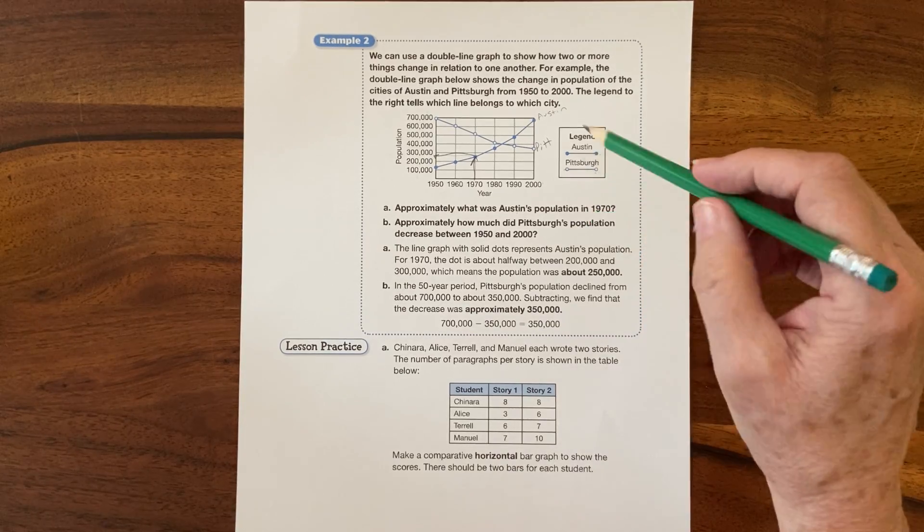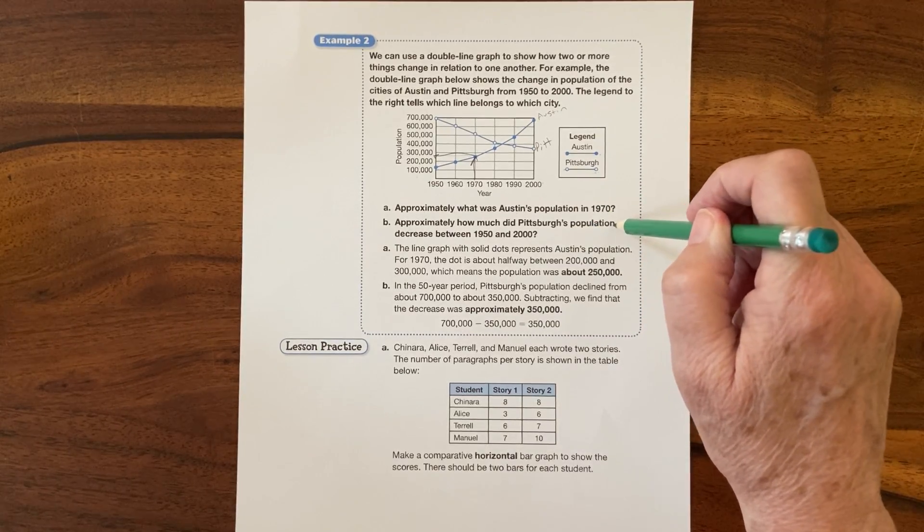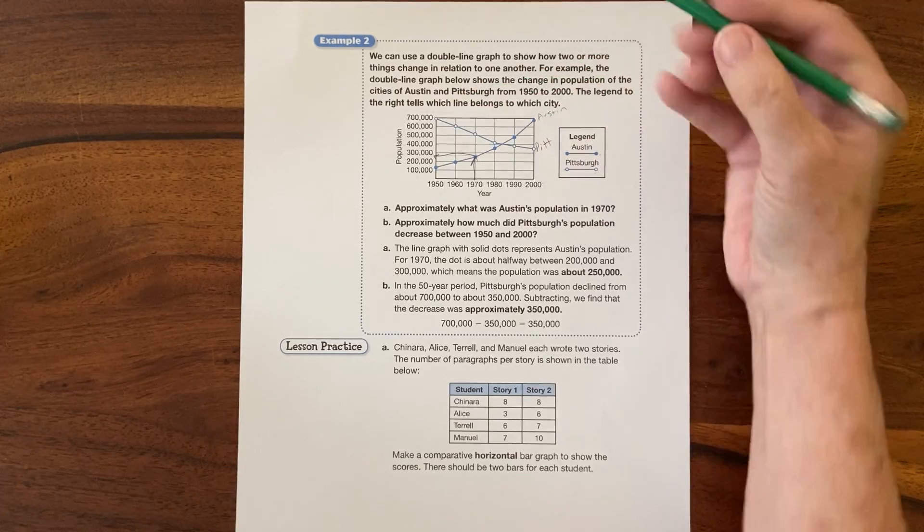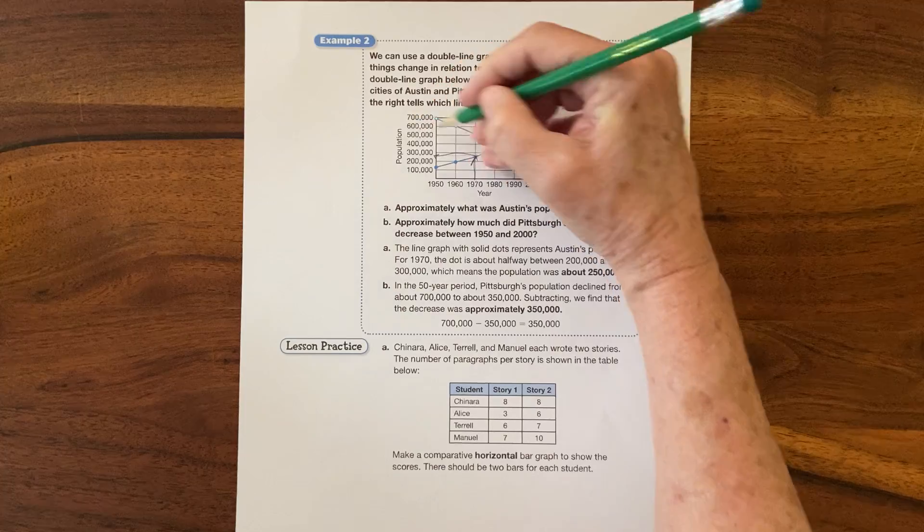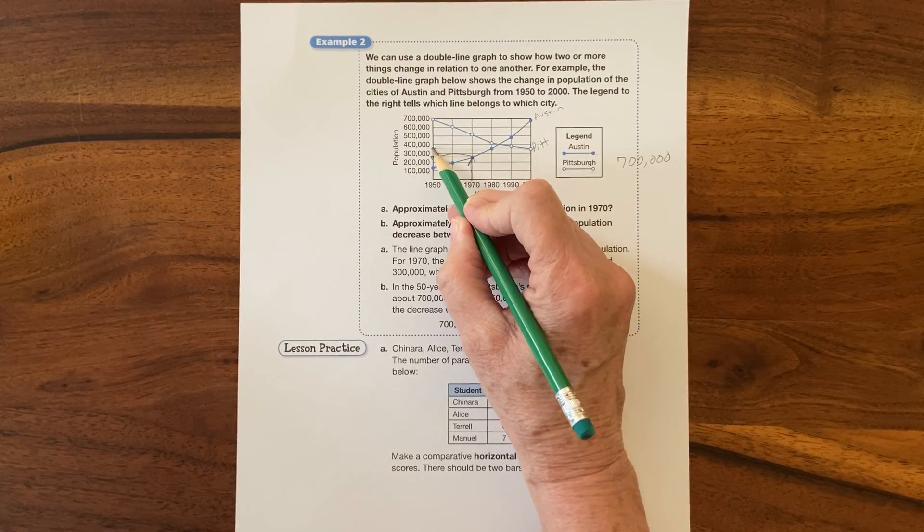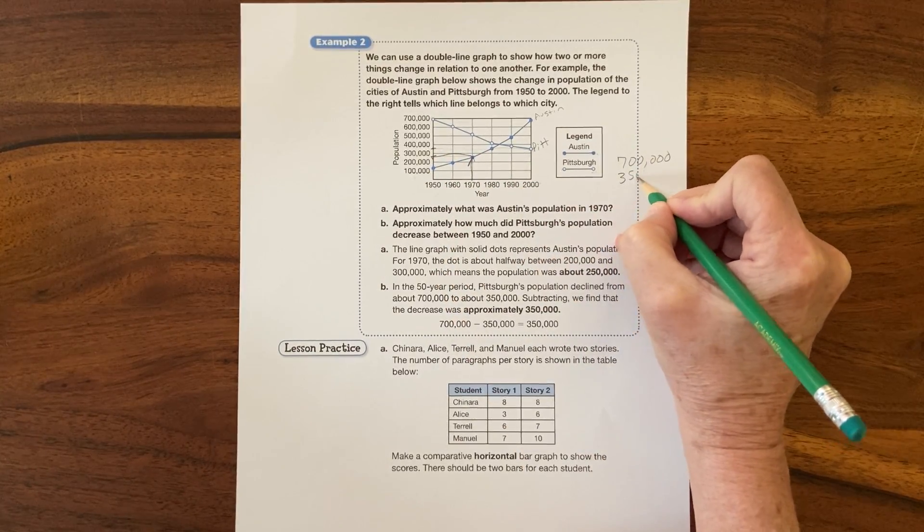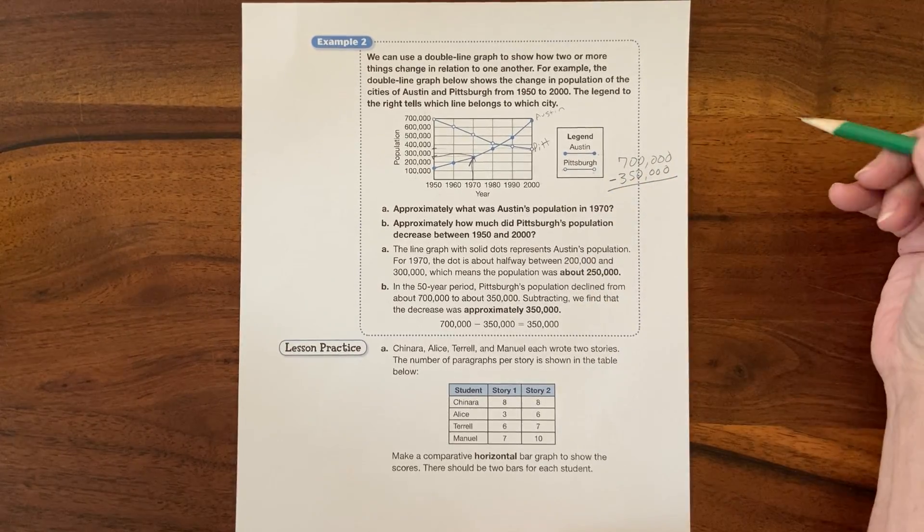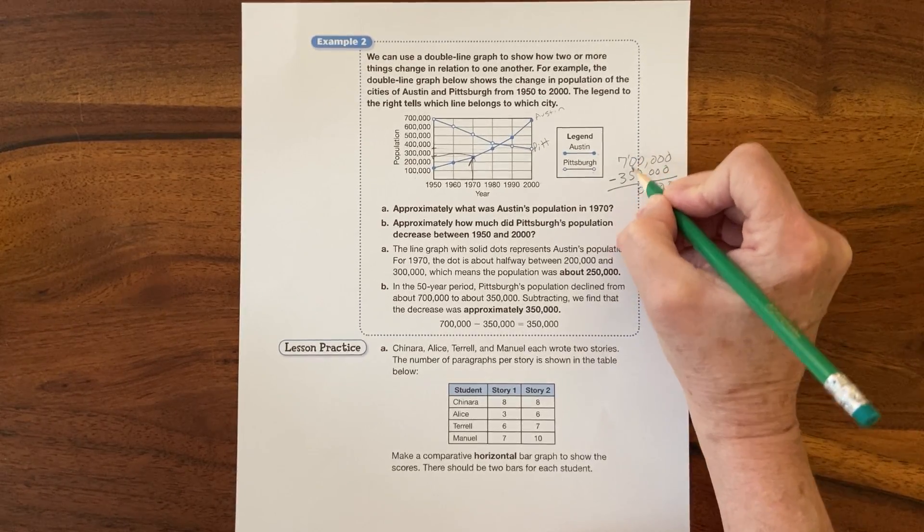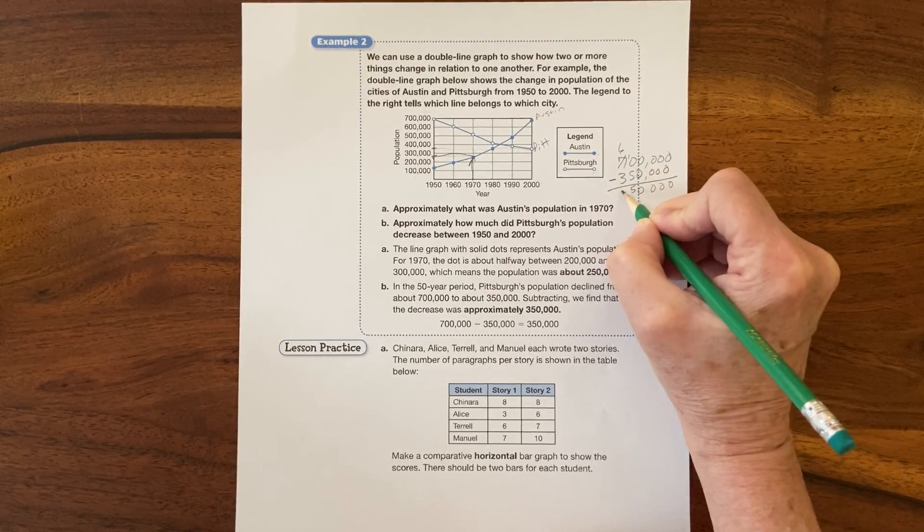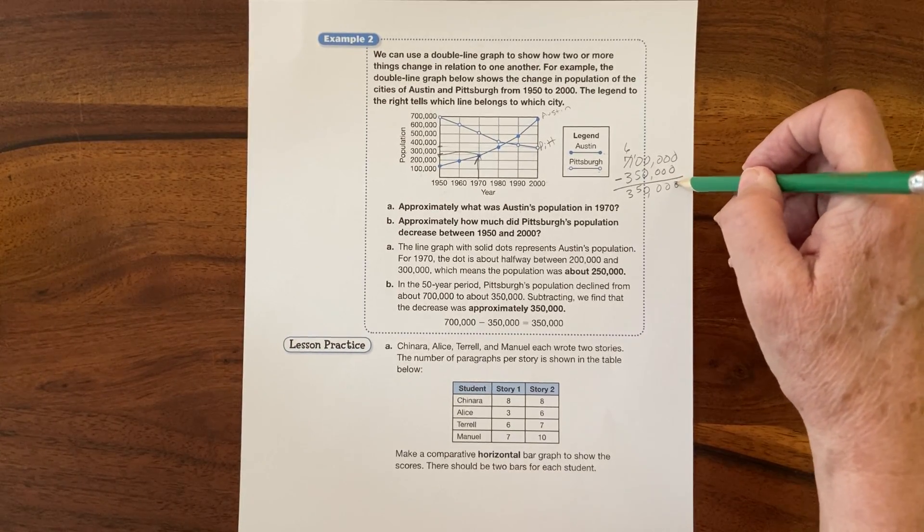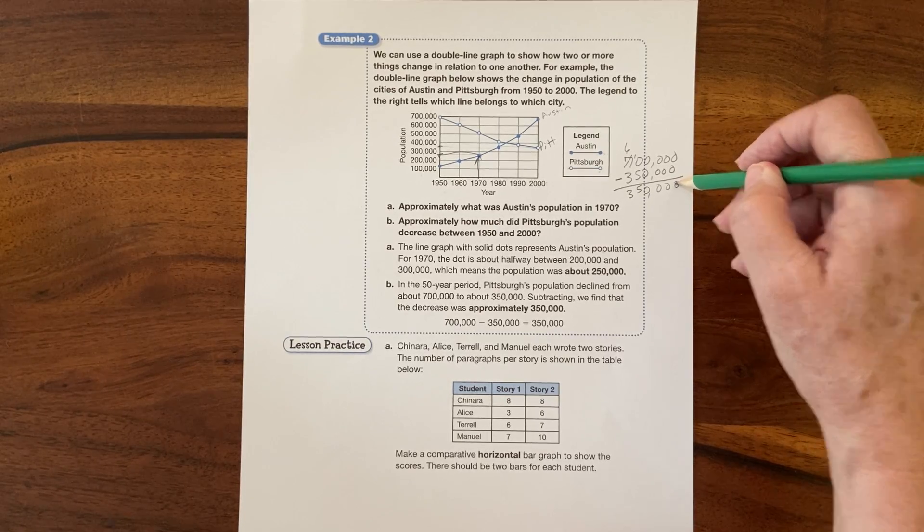Now let's think about Pittsburgh's population decrease. Oh that's not good. So they started at 700,000, so it's this line right here - 700,000. And then in 2000 it was, oops, got to go over here and look, it was 350,000 more or less. So if I'm looking for a decrease I'm subtracting, so I'm going to do my subtraction. It's 350, so it decreased, cut in half, by 350,000. That's interesting.